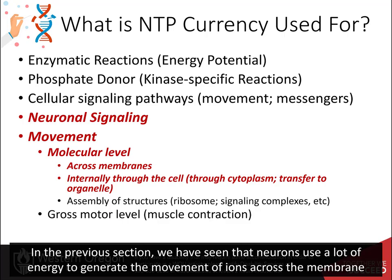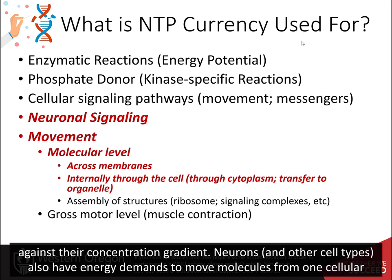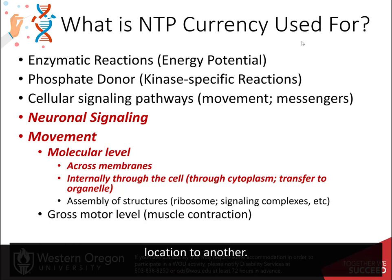In the previous section, we have seen that neurons use a lot of energy to generate the movement of ions across the membrane against their concentration gradient. Neurons and other cell types also have energy demands to move molecules from one cellular location to another.